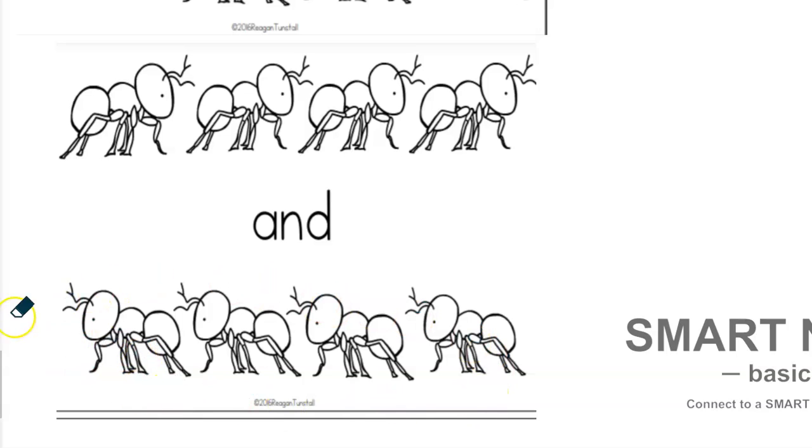How many ants do I have right there, Angela? Angela, can you hear me? Good job. Four and four make what, Angela? How many do I have all together? Cheated on me with eight. Good job. Eight. Four and four make eight.